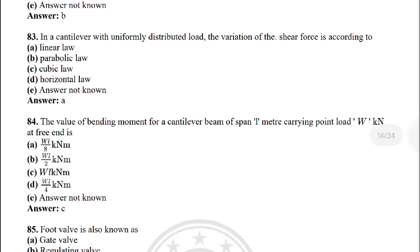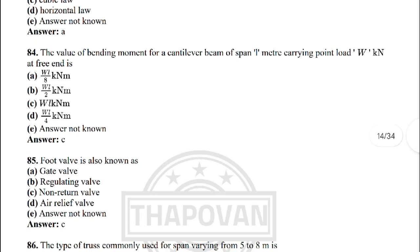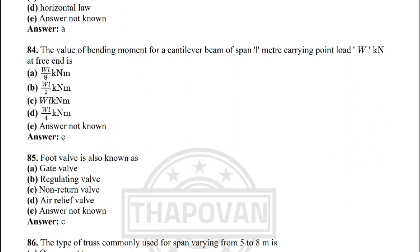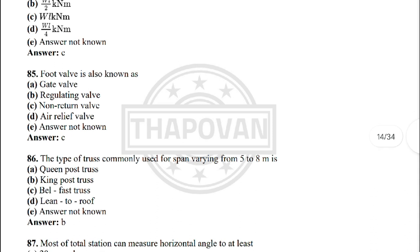Next: in a cantilever with uniformly distributed load, the variation of shear force is according to — the correct answer is option A: linear law. Next: the value of the bending moment of a cantilever beam of span L metres carrying a point load W kN at the free end is — option C: W×L kN·m.